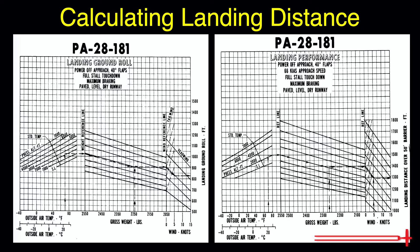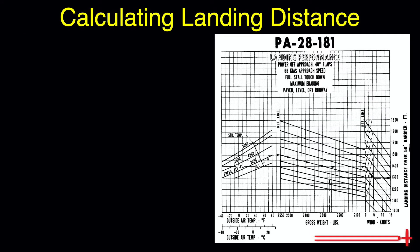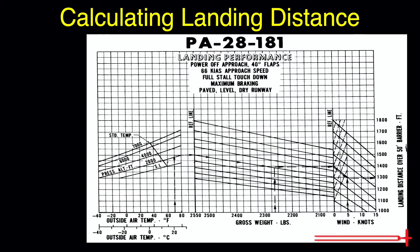We can begin with either chart. Today, let's start with the full distance to clear a 50-foot obstacle. Before diving into the chart, it's always important to read through the notes very carefully. These distances are based on a landing with closed throttle, 40 degrees of flaps, a 66-knot approach, and maximum braking on a paved, dry, level runway.